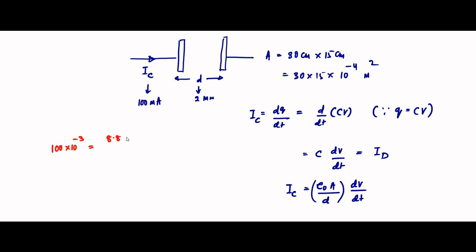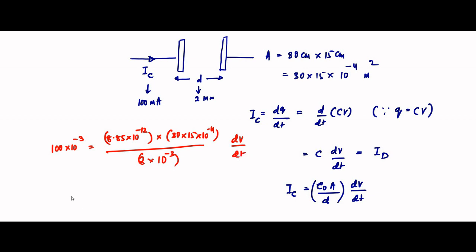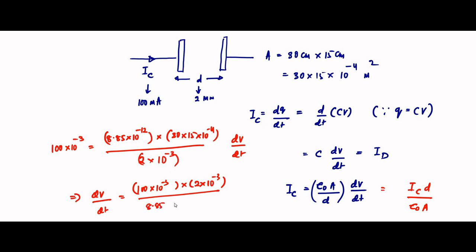Substituting values: 100 × 10⁻³ = (8.85 × 10⁻¹²) × (30 × 15 × 10⁻⁴) / (2 × 10⁻³) × dV/dt. Rearranging, dV/dt = Ic × d / (ε₀ × A) = (100 × 10⁻³ × 2 × 10⁻³) / (8.85 × 10⁻¹² × 30 × 15 × 10⁻⁴).